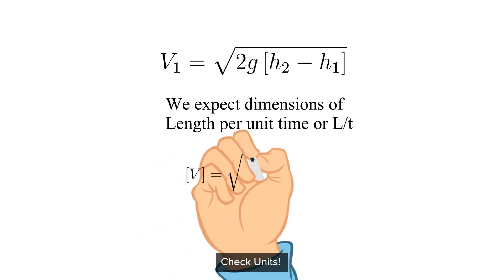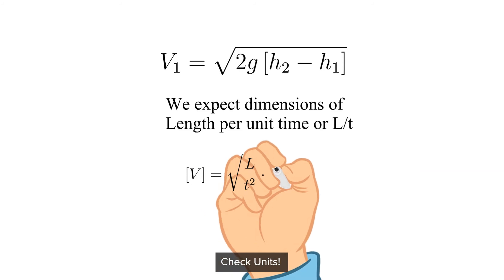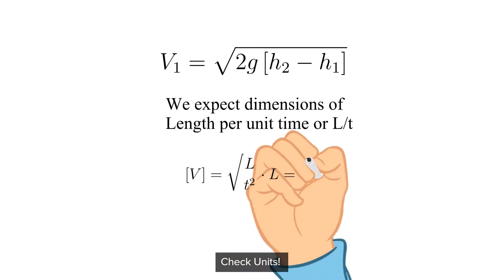The gravitational constant has dimensions of length over time squared. The dimension of the liquid columns, H, is length. The square root of length squared over time squared is indeed length over time. Check complete.